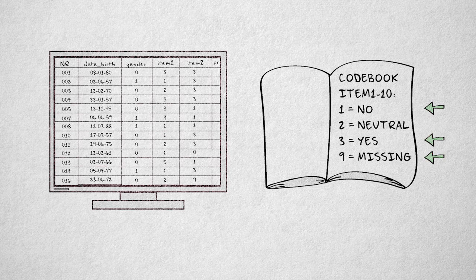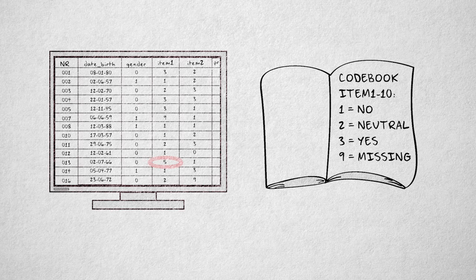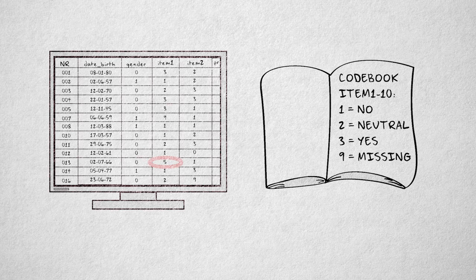Without this information, we would not realize that something went wrong if we find a score of 5. We could have made, for example, an error entering the raw data into the computer. Because data entry errors are always made, it's extremely important to always save the original data.